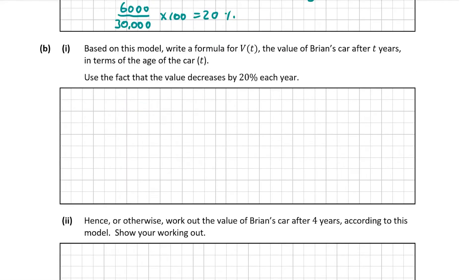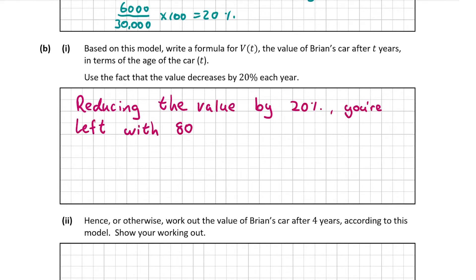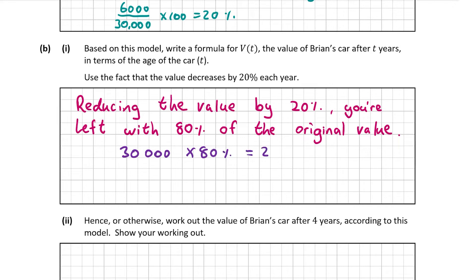B part 1 asks us to write a formula for Vt, using the fact that the value decreases by 20% every year, where Vt gives the value of Brian's car after T years. The key insight is that reducing something by 20% leaves you with 80% of the original value. So rather than finding 20% of 30,000 and subtracting, you can simply find 80% of 30,000, which also gives €24,000.